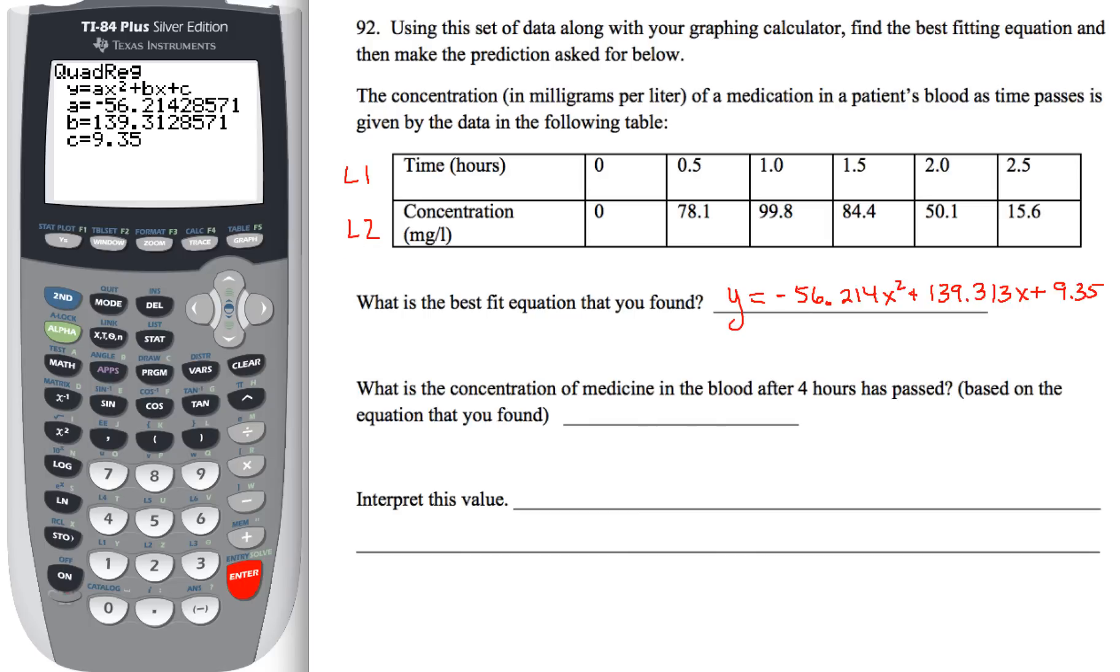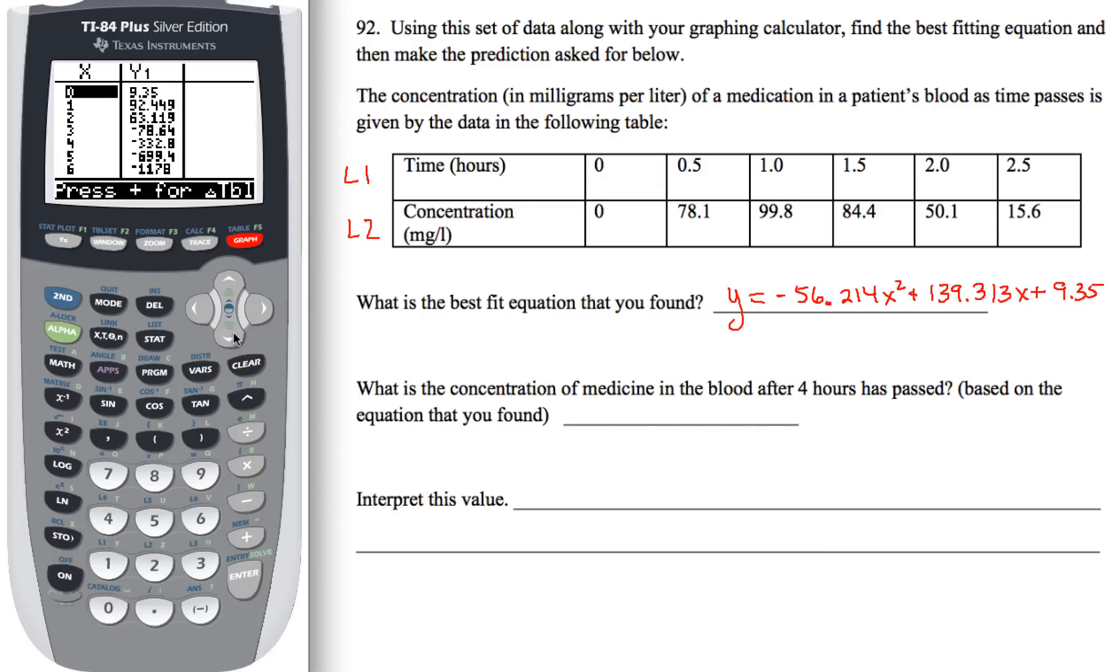For the next question, where it says, what's the concentration of medicine in the blood after four hours has passed? This question I love because we already did a little bit of work earlier. That's going to help us out with this. We're going to go to our table of values. To get there, you do second graph. And then, arrow down, check that out. If you look at where x is four, across from that is going to tell us the concentration of medicine in the blood after four hours, which is this value of negative 332.8. Negative 332.8 is our concentration of medicine in the blood after four hours has passed.